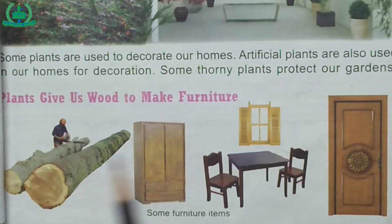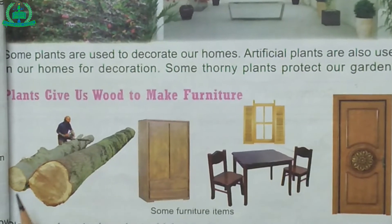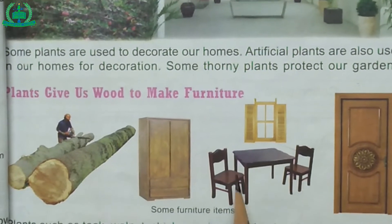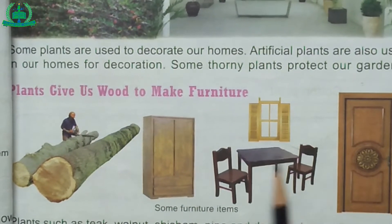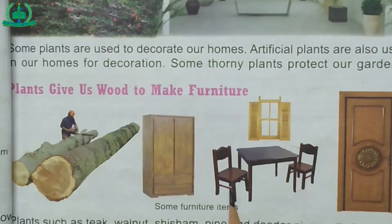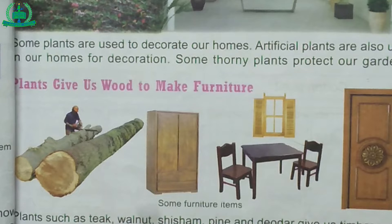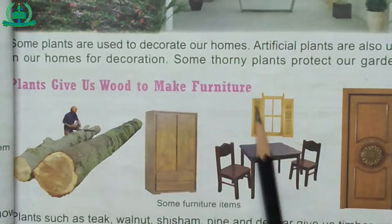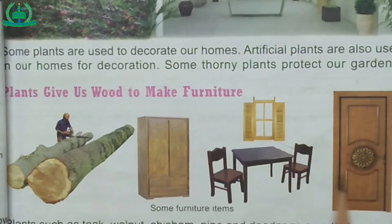Plants give us wood to make furniture. Plants such as teak, walnut, shisham, pine and deodar give us timber wood to make furniture. Chairs, tables, sofa sets, closets, doors and windows are some examples of furniture.